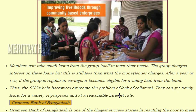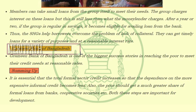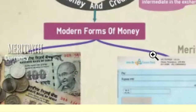The Grameen Bank of Bangladesh is one of the biggest success stories in reaching the poor to meet their credit needs at reasonable rates. It is essential that total formal sector credit increases so that dependence on the more expensive informal credit becomes less. The poor should also receive a much greater share of formal loans from banks and cooperative societies — both steps are important for development.